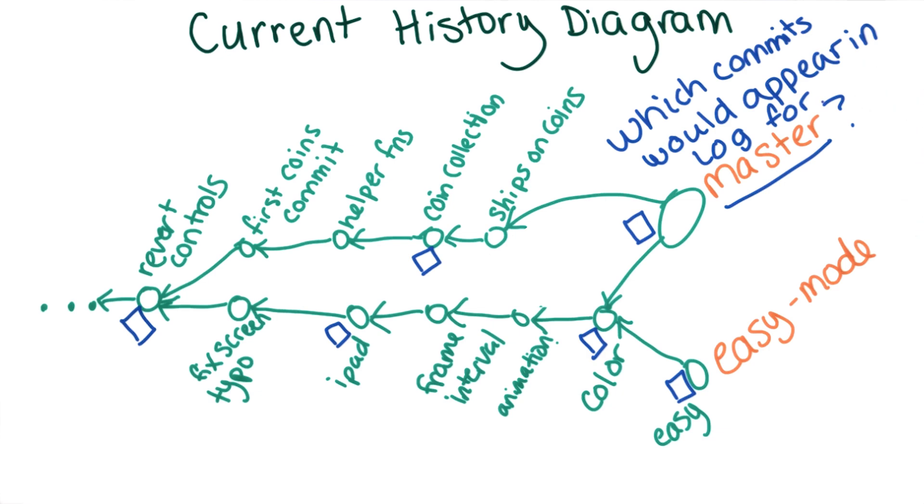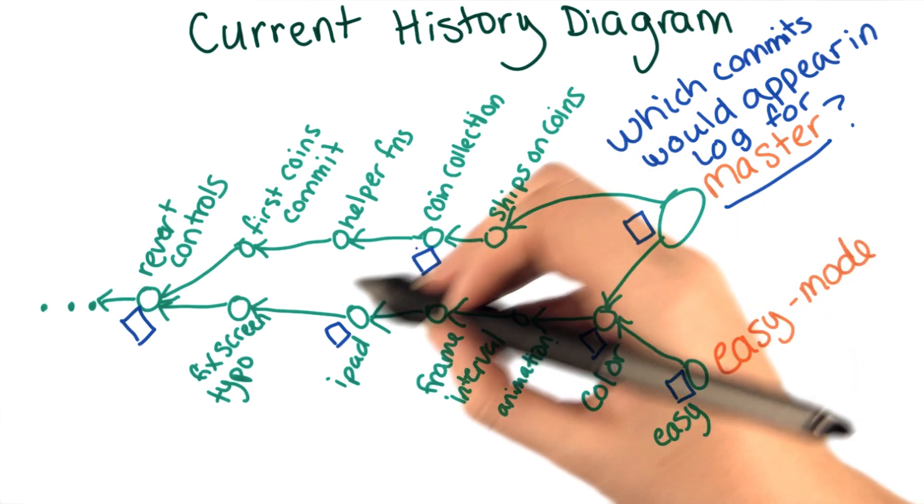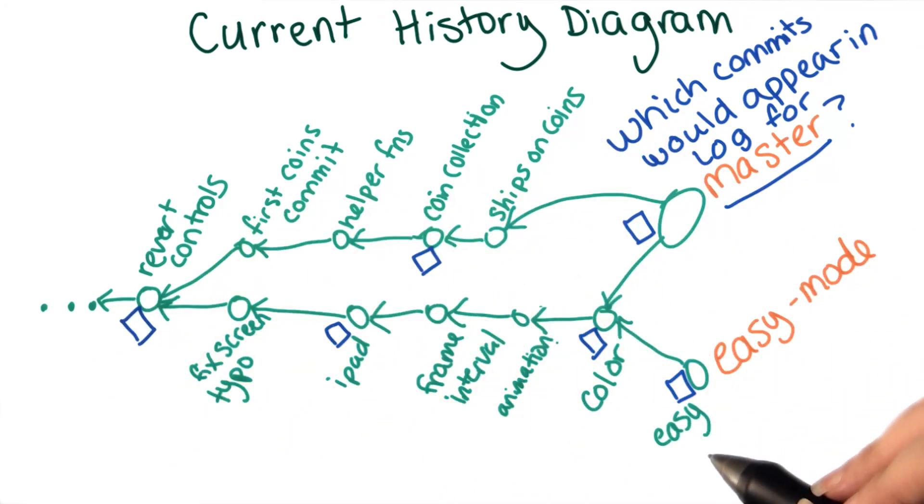After you create the merge commit, which commits do you think would be included if we ran git log on the master branch? For each of the commits with a checkbox next to it, check whether or not you think it would be included.